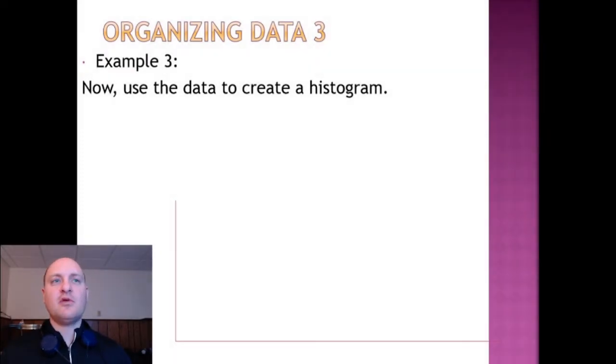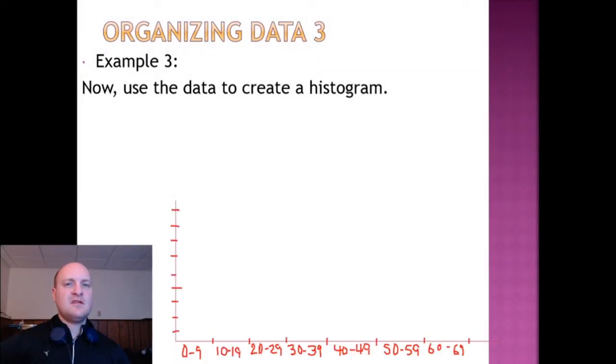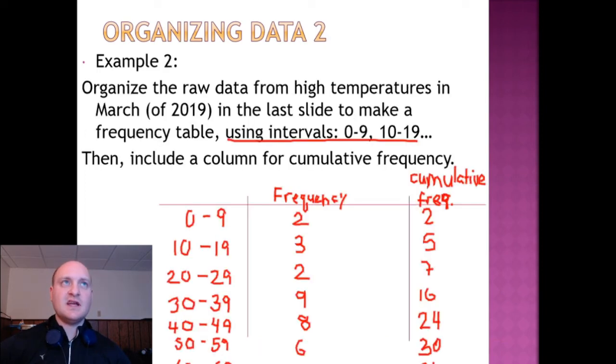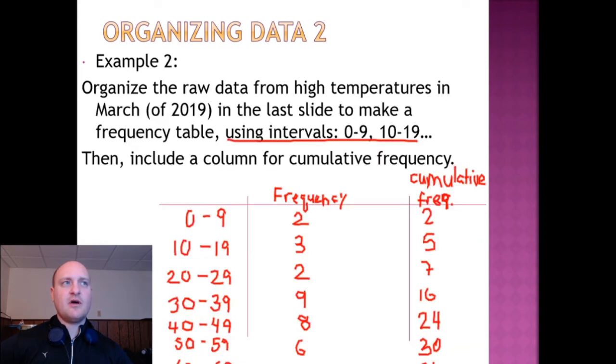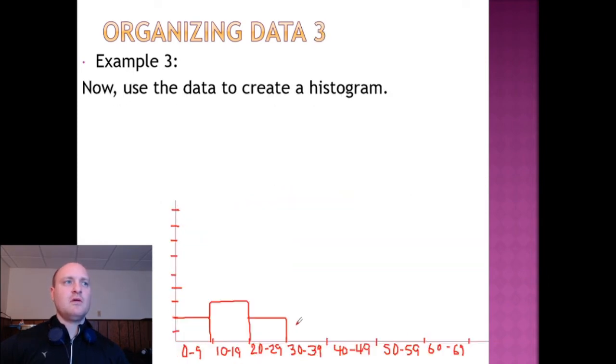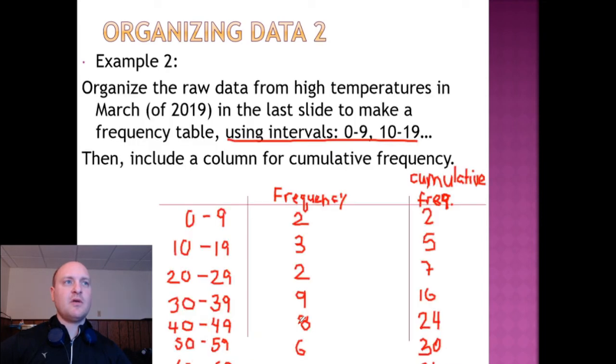Next, we're tasked with taking the data and putting it into a histogram. This is like making a bar graph, except that the bars come from the values in our frequency table. So in the 0 to 9, we'll have a bar of 2. In 10 to 19, we'll have a bar of 3. From 20 to 29, we'll have a bar of 2. From 30 to 39, we'll have a bar of 9.